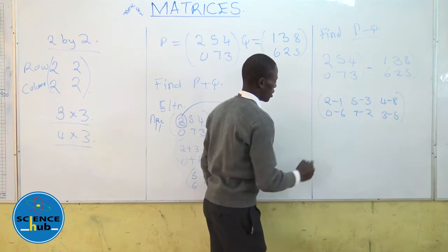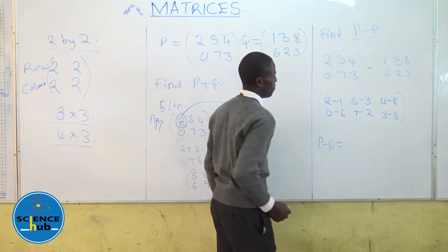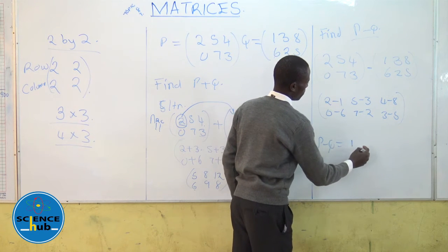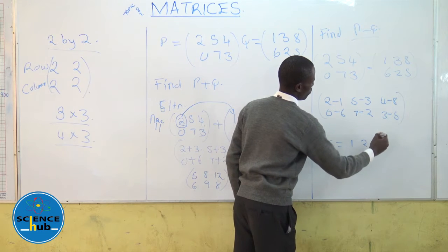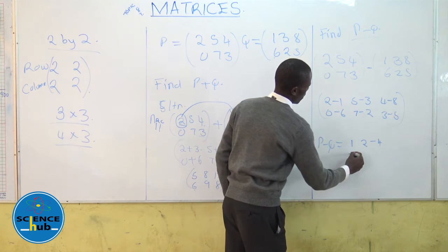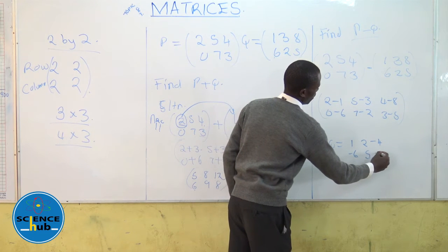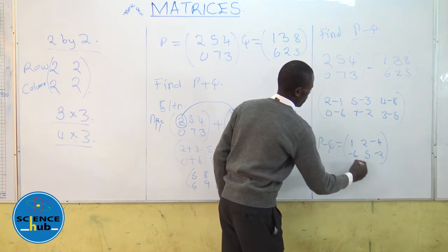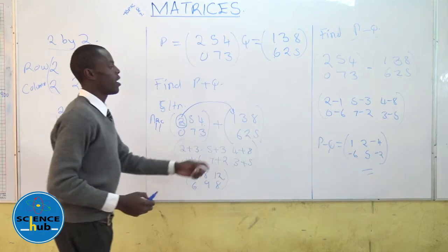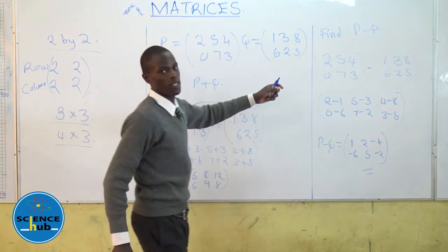Hence P minus Q will be given as 1, 2, negative 4, negative 6, 5, negative 2. That will be our answer when you are given P minus Q.